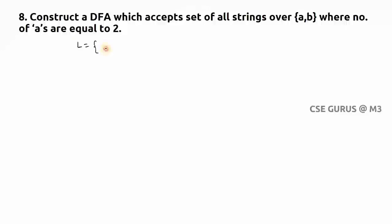The DFA has to accept AA, and also ABA — because he has not said those two A's must be consecutive. Next, I can write BAA, and I can write ABBBBA. So whatever may be the number of B's, the number of A's should equal 2.